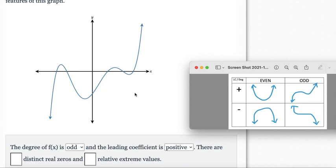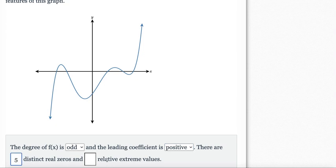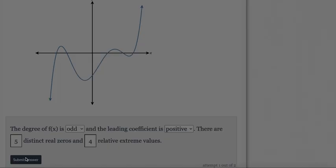Zeros is wherever x and the graph touches. One, two, three, four, five. Relative extreme values. Once again, extreme means all the hills and the dips. So one, two, three, four. Four extreme values.